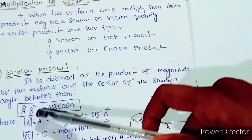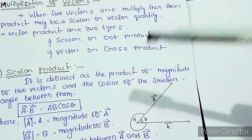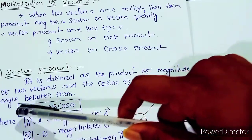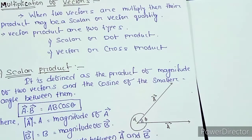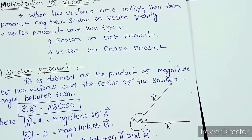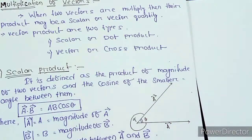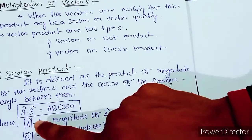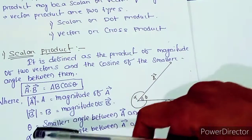The dot product is written as A dot B, and it equals AB cosθ — where A is the magnitude of vector A, B is the magnitude of vector B, and θ is the smaller angle between them.